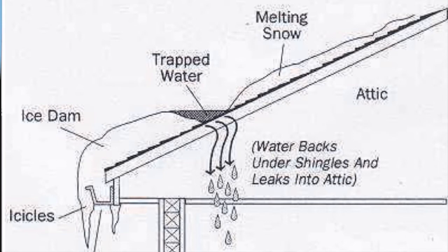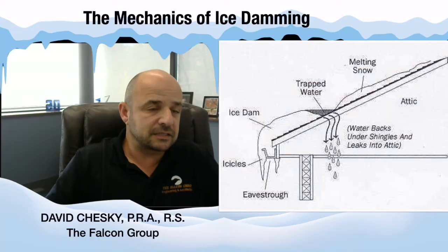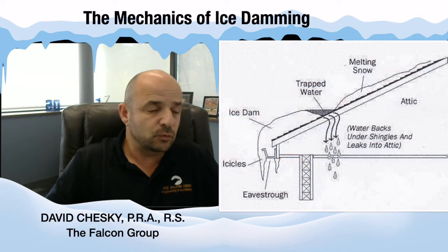However, if you have HVAC equipment in the attic space, or heat escaping from the living space below into the attic — say from lack of insulation or maybe the insulation has moved — that's going to cause the snow to melt on the upper portions of the roof. As that snow melts, it drains down over the lower portion of the roof towards the eave or the overhang.